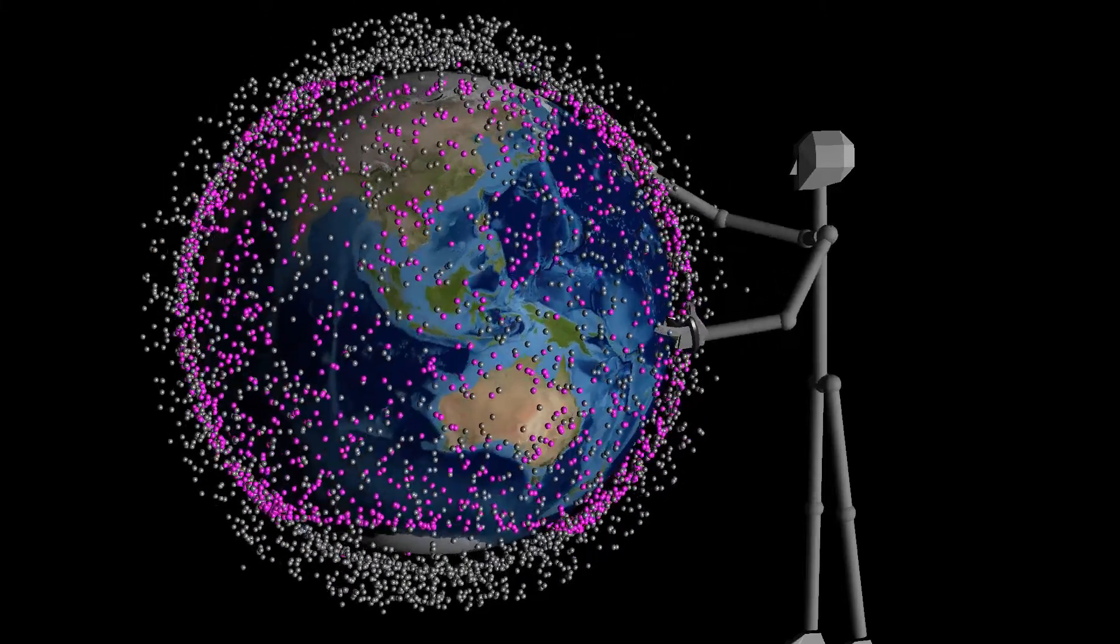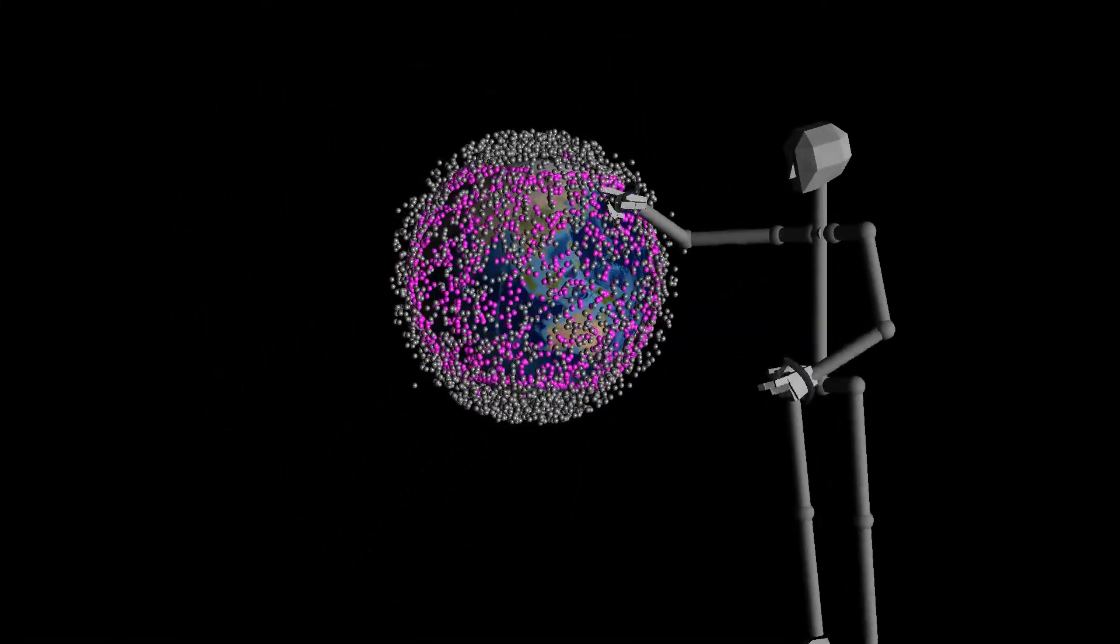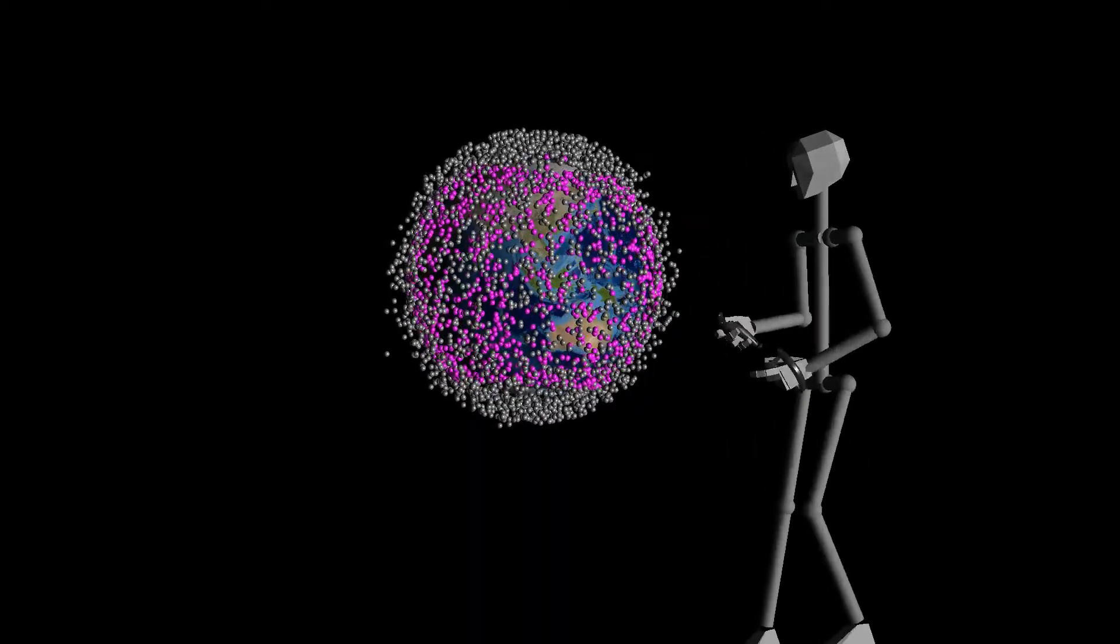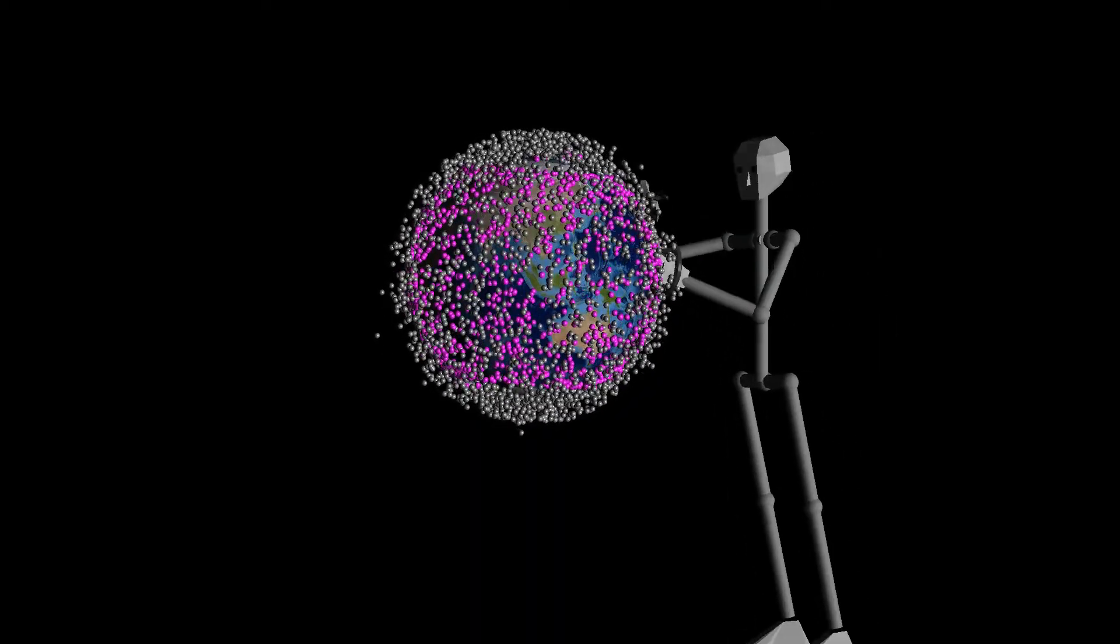Here they all are, still showing the Starlink satellites on purple. There are so many of them, 6,660 to be precise, that I can no longer draw their orbits, or it would look like a solid ball of twine.